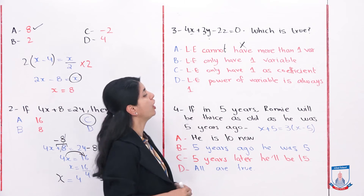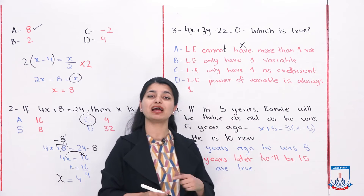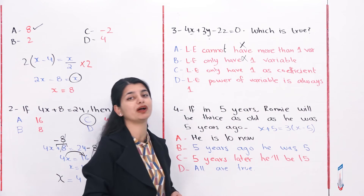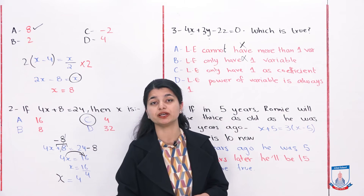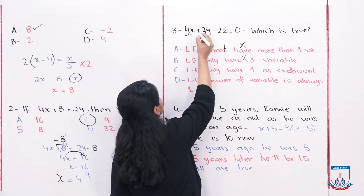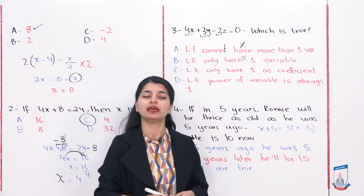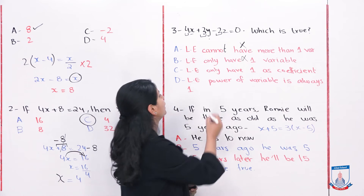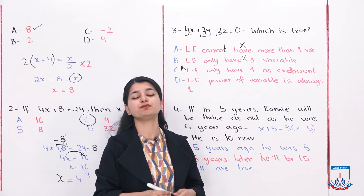Option B says linear equations only have one variable — that is the same idea again, and it is not true either, since they can have more than one variable. Option C says linear equations can only have one as a coefficient. The coefficients are the numbers with the variables: 4 for x, 3 for y, and 2 for z. They can be any value, so Option C is also not true.